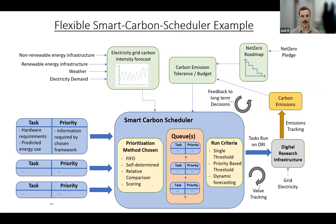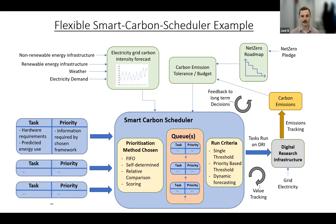This is an example of what a flexible smart carbon scheduler might look like. The scheduler receives a task, prioritises it by the chosen method, and outputs them to the hardware as allowed by run criteria. The prioritisation method acts as the value comparison method. These could range from very direct score quantification, a relative comparison between queued tasks, self-scoring by users using design principles of common pool resources, or even no prioritisation at all. The scheduler also has awareness of the carbon intensity of the electrical grid and a set carbon tolerance. Several websites provide forecasts of grid carbon intensity in different parts of the UK, though some can be overly optimistic as they ignore non-trivial emissions associated with renewable energy infrastructure.